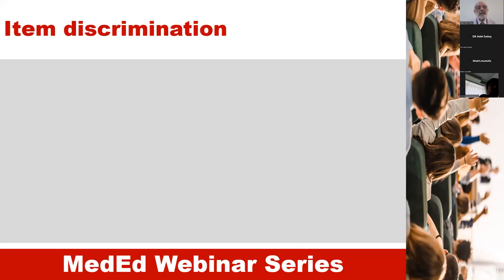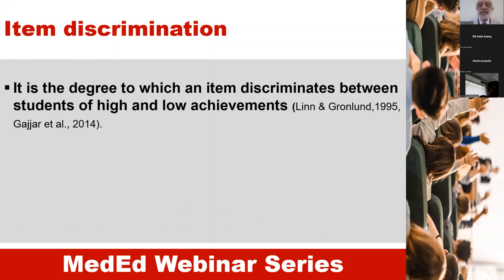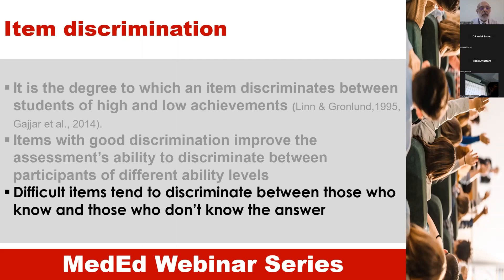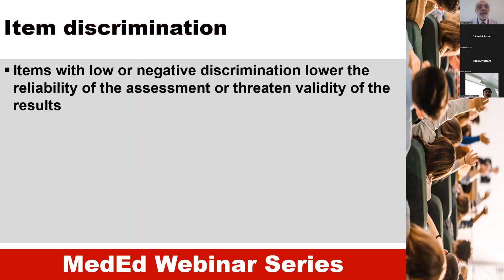Let's go to the second type of item analysis: item discrimination. It is the degree to which an item discriminates between students of high and low achievements. Items with good discrimination improve the assessment's ability to discriminate between participants of different ability levels. Difficult items tend to discriminate between those who know and those who do not know the answer. Items with low or negative discrimination lower the reliability of the assessment and threaten validity of the results.